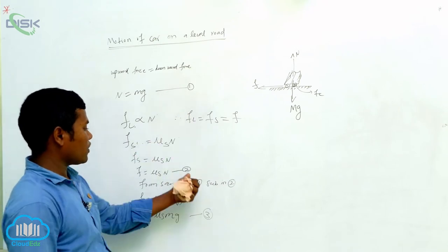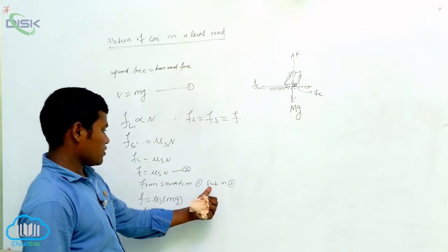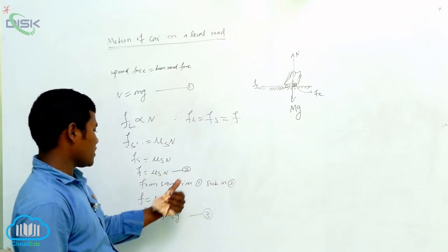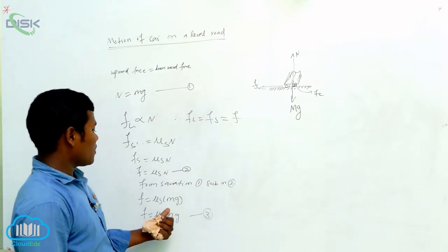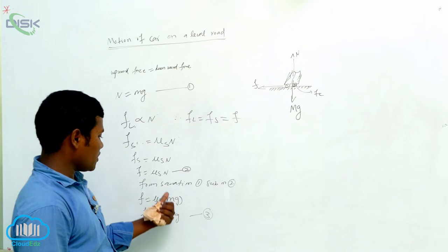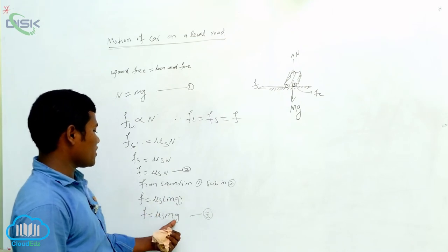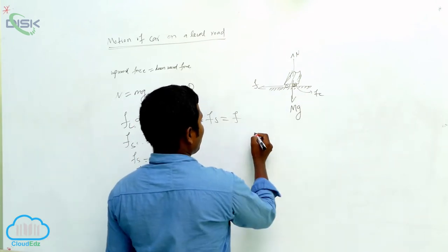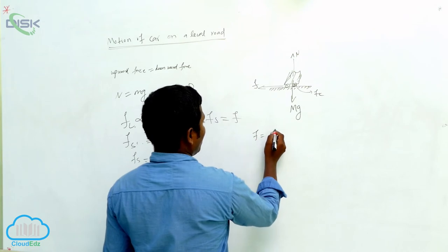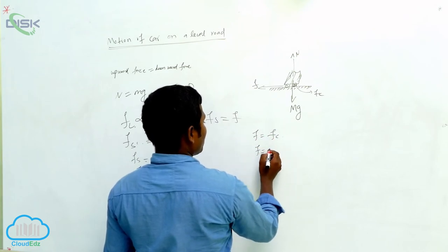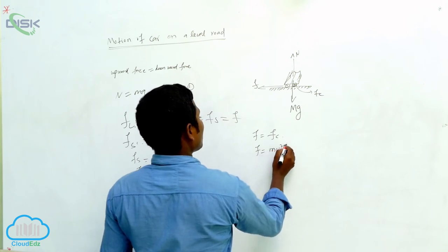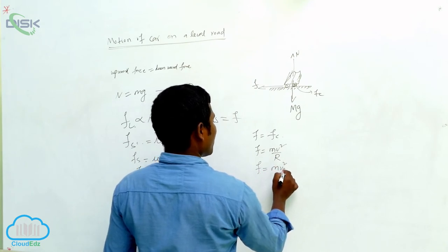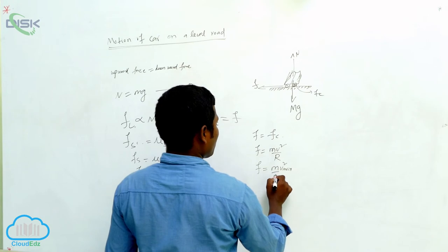From equation 1 and 2: in equation 1 we got N equal to mg. Substituting that mg value into equation 2, we get F equal to μs mg. Another force also acting is the centripetal force. Centripetal force Fc is equal to mv square by r, or we can say F equal to Fc equal to mv square max divided by R.